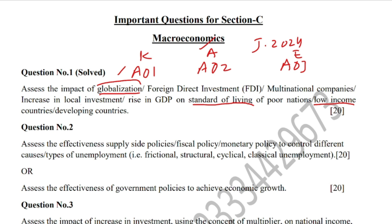Then you move to the analysis part, where you show how globalization can improve the standard of living of low-income countries. You can use the concept of the PPC and shift it to the right, or use the 45-degree line concept with aggregate demand and aggregate supply curves. You shift the aggregate demand curve to the right, or shift the aggregate expenditure line upward, showing an increase in national income by multiple times depending on the value of the multiplier.